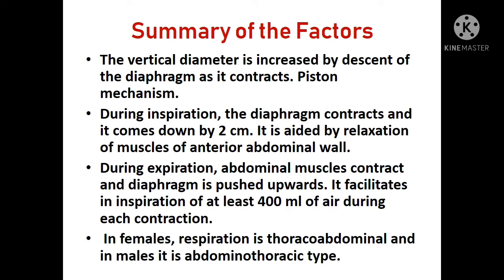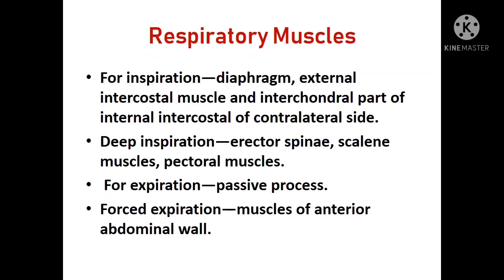During inspiration, the diaphragm contracts and comes down by 2 cm, aided by relaxation of the muscles of the anterior abdominal wall. During expiration, the abdominal muscles contract and the diaphragm is pushed upwards. This facilitates inspiration of at least 400 ml of air during each contraction. In females, respiration is chiefly thoracoabdominal; in males, it is abdominal thoracic type.